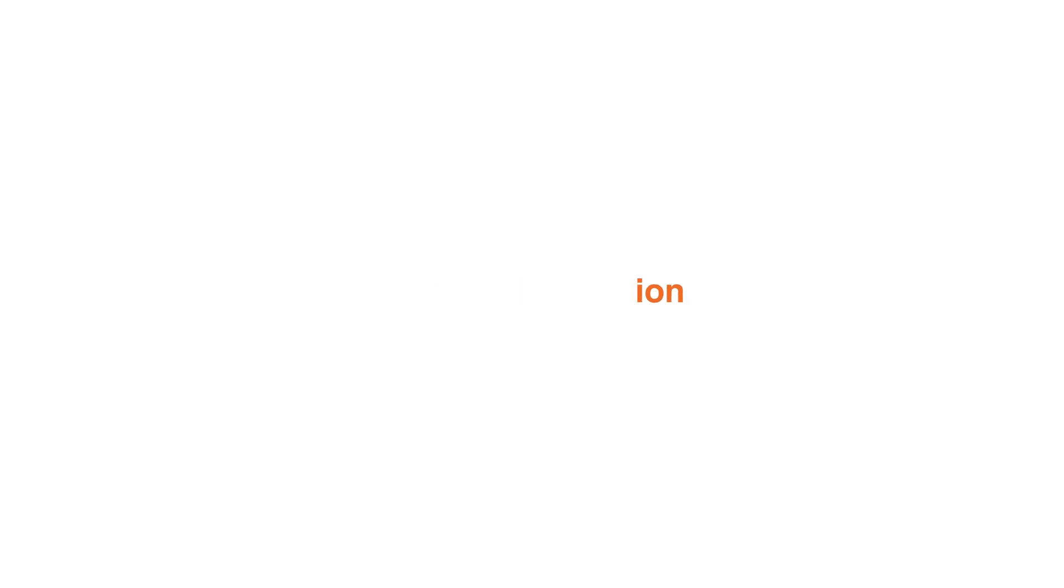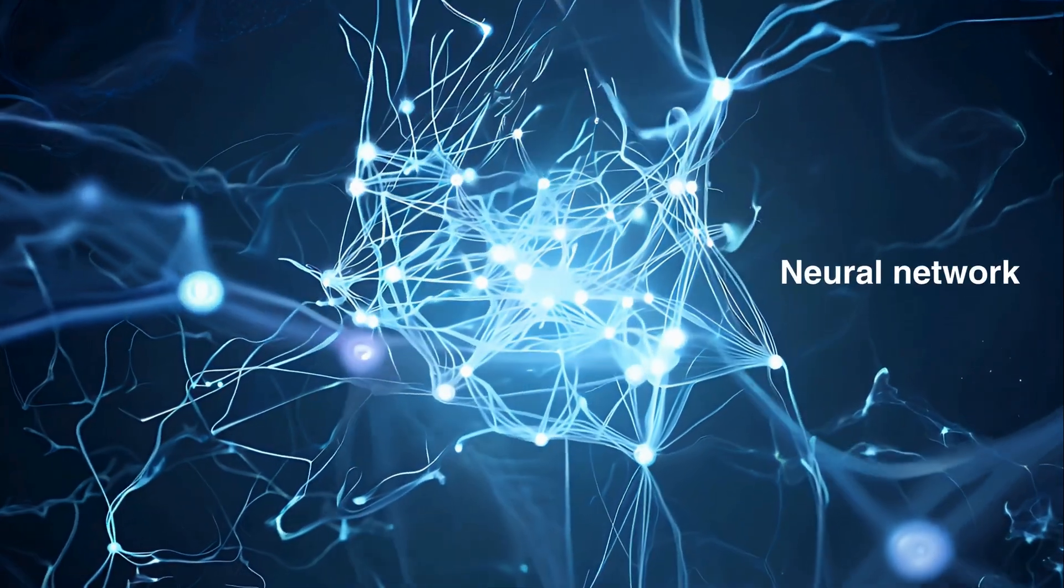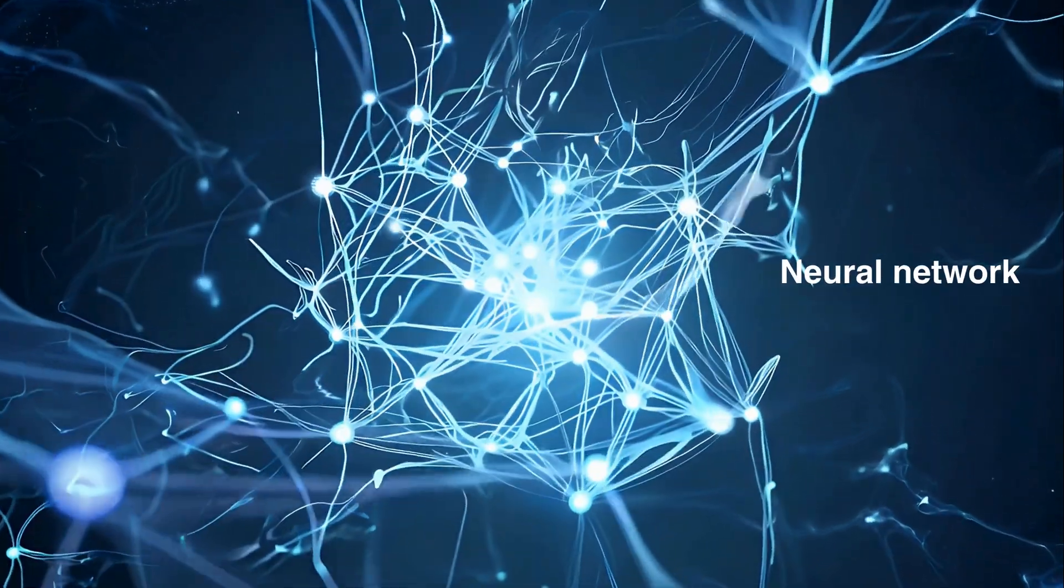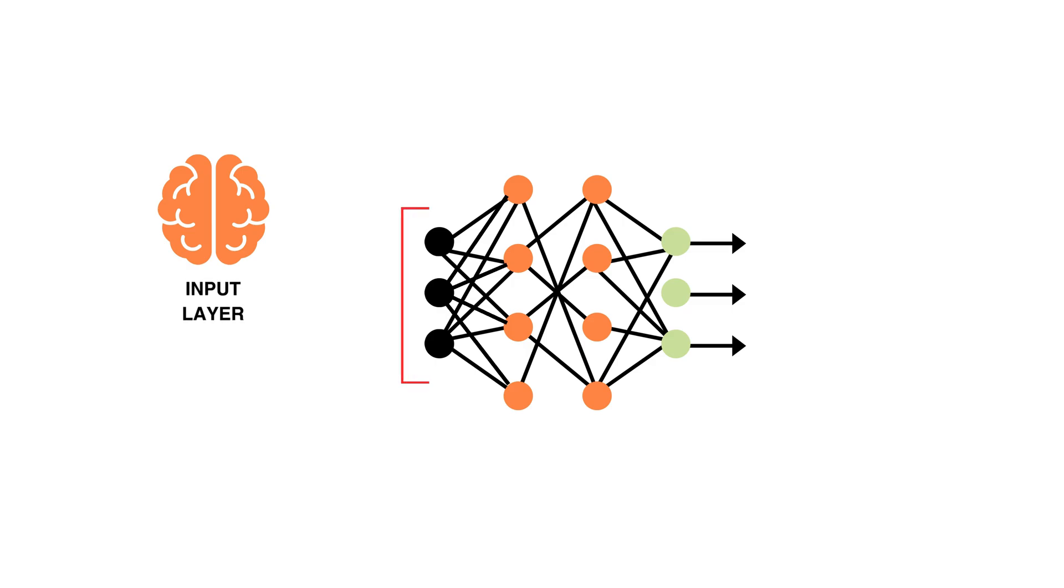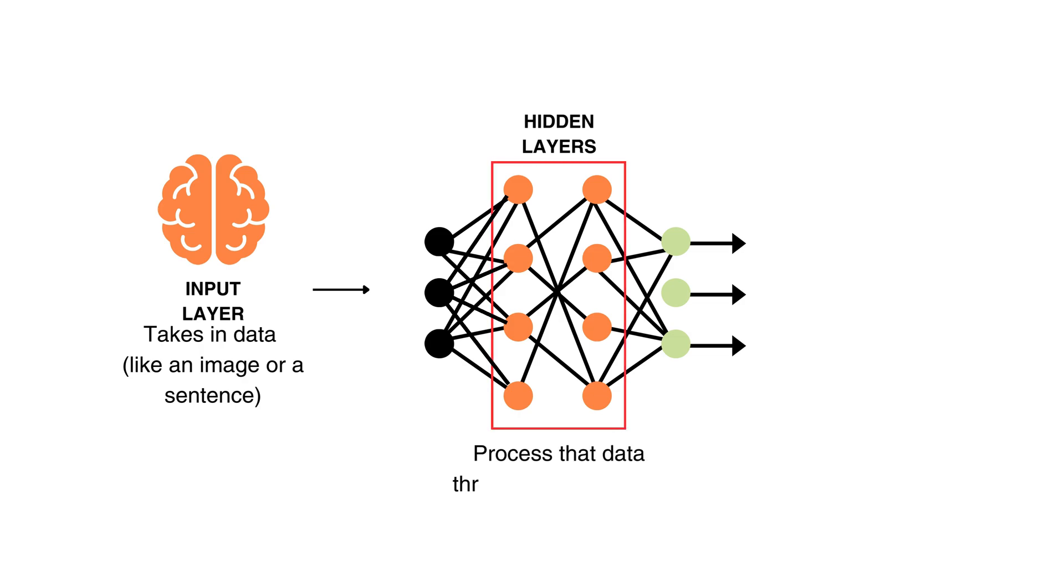Before we talk about backpropagation, let's quickly revisit what a neural network is. A neural network is modeled after the human brain. It's made up of neurons arranged in layers. The input layer takes in the data like an image or a sentence. The hidden layers process the data through mathematical functions. And the output layer gives the results like, is this a cat or a dog?